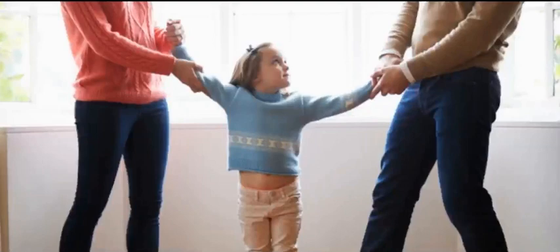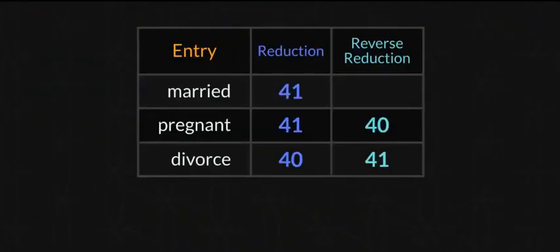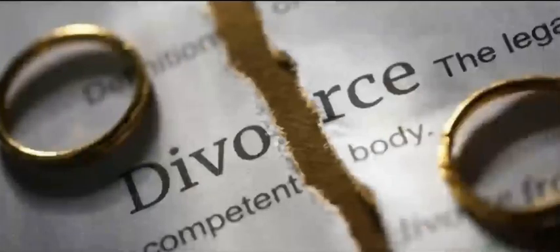Just be careful around your children and try to be the best influence you can. You see how 'married' equals 41, and with 'pregnant' and 'divorce' you get 41 and 40. We do these decodes like this — videos to make you think. It's just interesting, and I may have to start doing more of these.